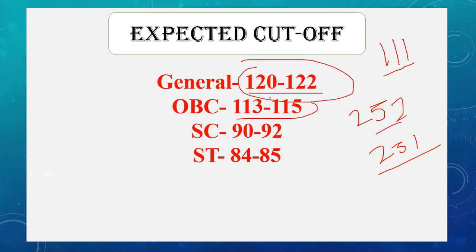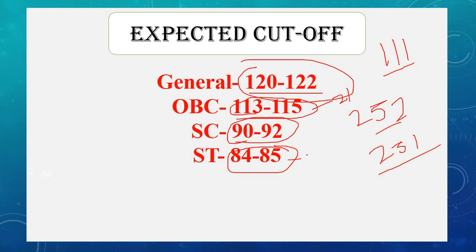For OBC, the expected cut-off is between 113 and 115. For Scheduled Caste and Scheduled Tribes, the expected cut-off is around 90 to 92. So this is the expected cut-off, and those who are in this range can proceed accordingly.